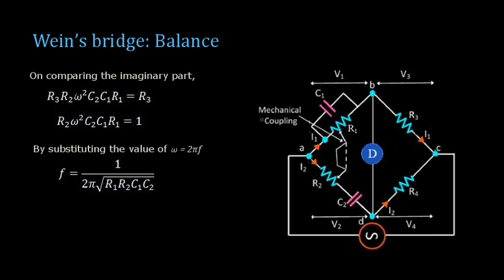When you compare the imaginary part, you will have R3 ω² C2 C1 R1 equal to R3. Here you can see that a term which is corresponding to ω is reduced into this equation. Till the bridges we have come across, we didn't have the ω term. Here we have the ω term and this ω corresponds to the frequency. Once you substitute ω equal to 2πf, you will get the value of frequency, that is the supply frequency. f is corresponding to 1 by 2π into root of R1, R2, C1, C2.